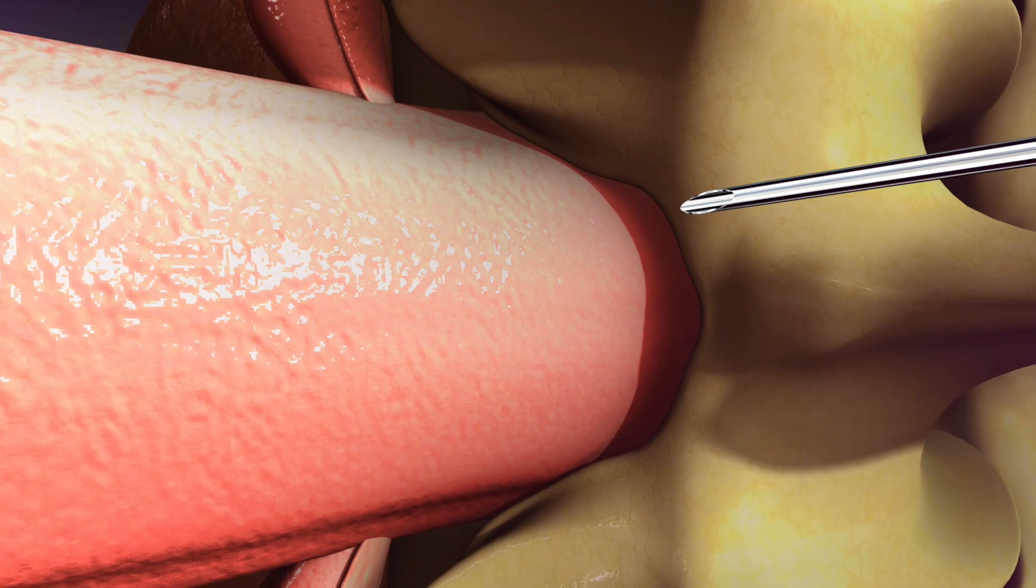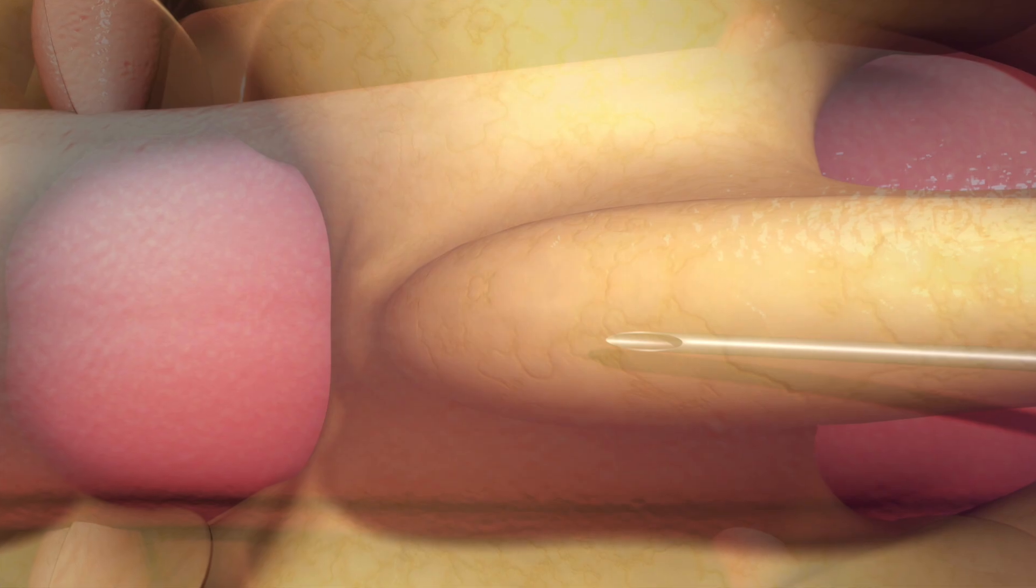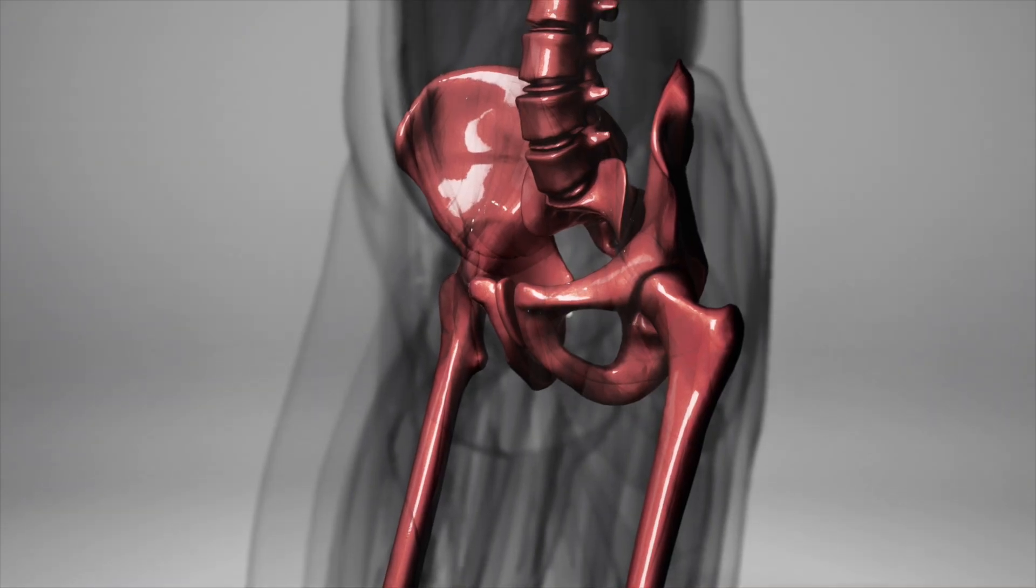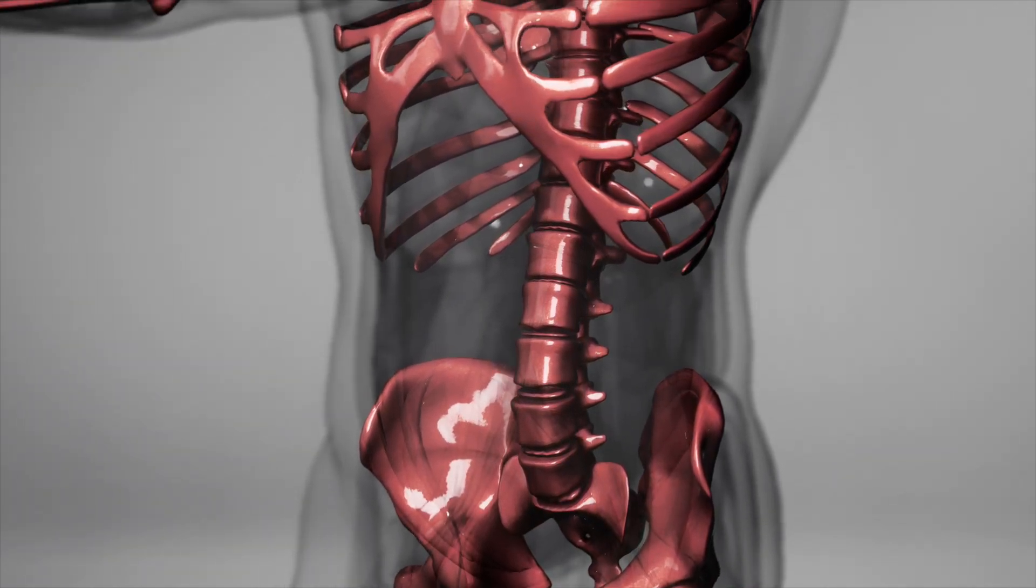Spinal anesthesia involves a single injection of medication directly into the cerebrospinal fluid around your spinal cord using a fine needle placed in your lower back. This method works very quickly, often within a few minutes, providing complete numbness from the waist down.